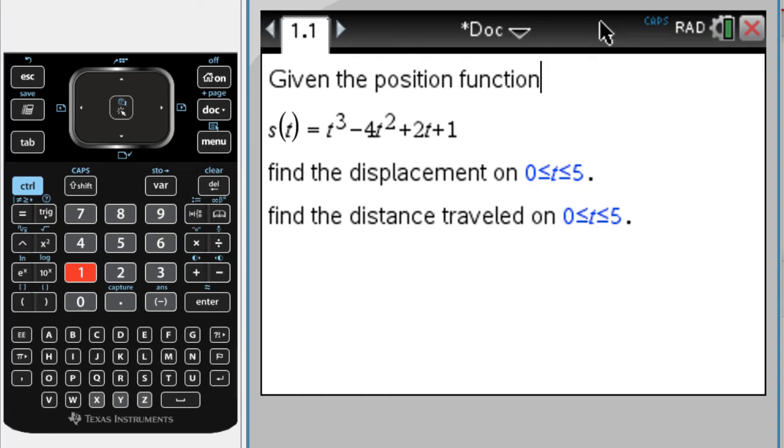In this video we are going to solve this problem. We're given the position function s of t equals t cubed minus 4t squared plus 2t plus 1. We want to find the displacement on the interval from 0 to 5, and also the distance traveled on the interval from 0 to 5. We're going to use the calculator all the way through.